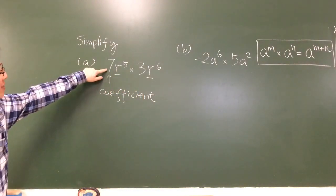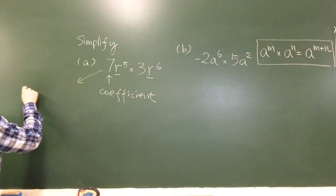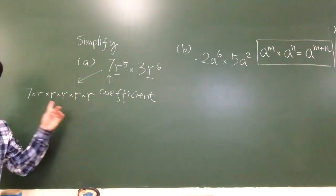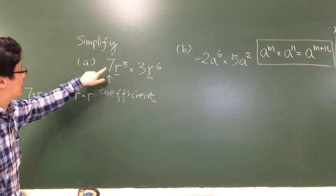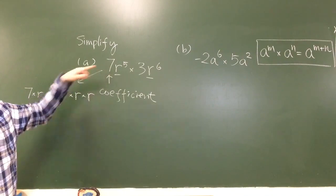Just the number. 7 times r to the power of 5 means we multiply 5 r's together, and therefore the power of 5. The number 5 does not affect the number 7.